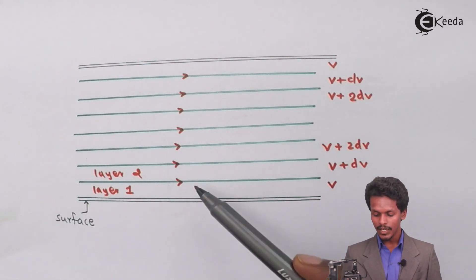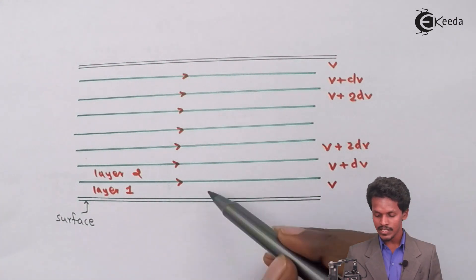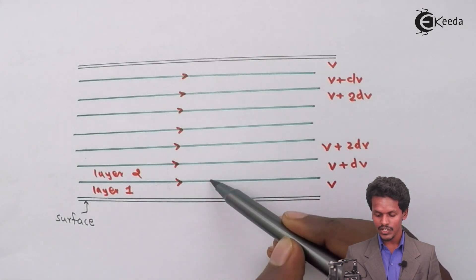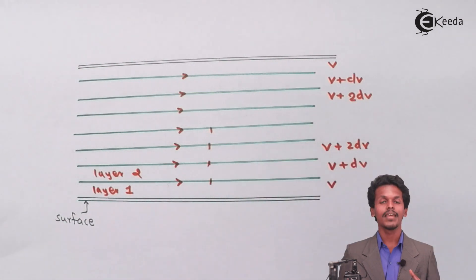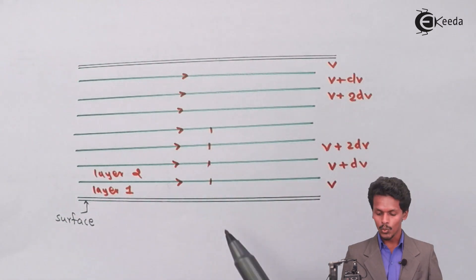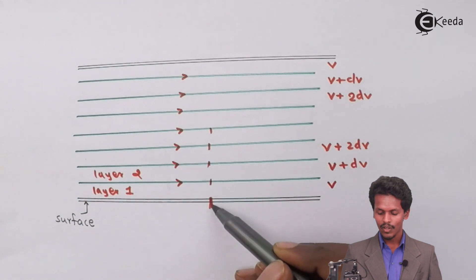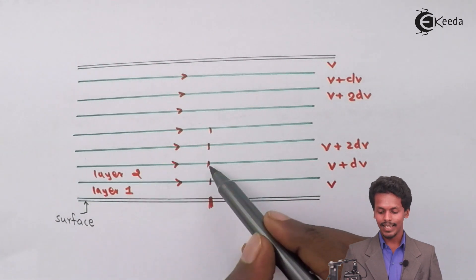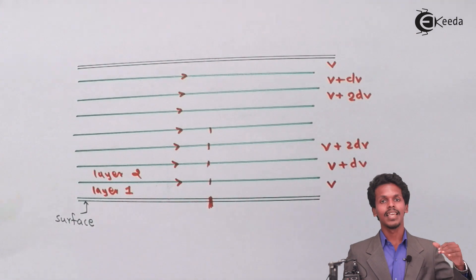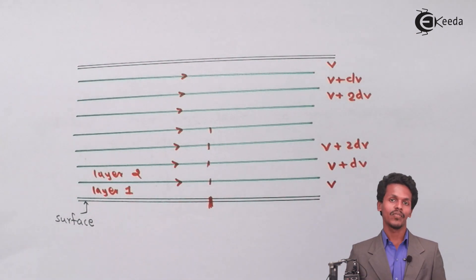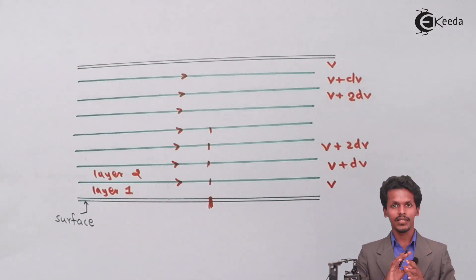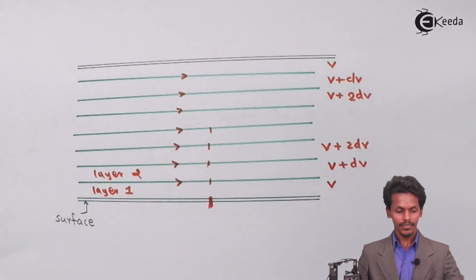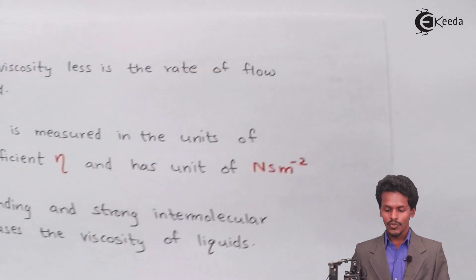Friction is observed in every layer, with maximum friction near the surface and decreasing friction toward the middle. Therefore, in the middle section, the liquid flows at maximum speed, which is especially relevant when the liquid is enclosed in a pipe.